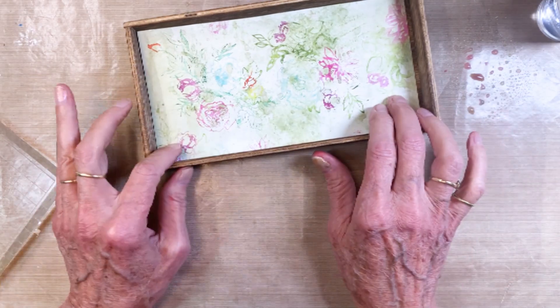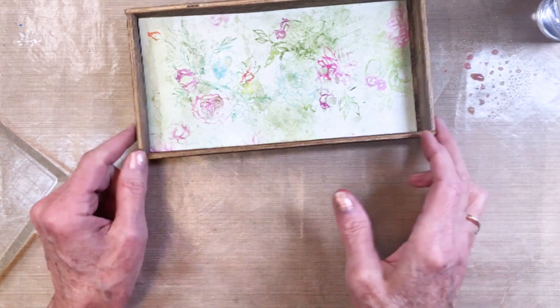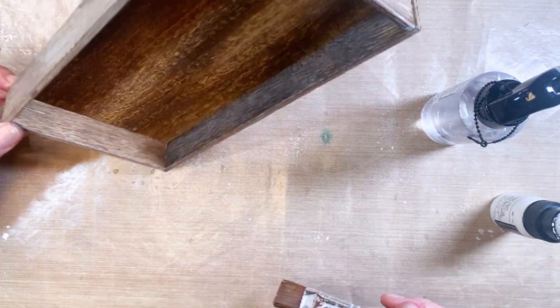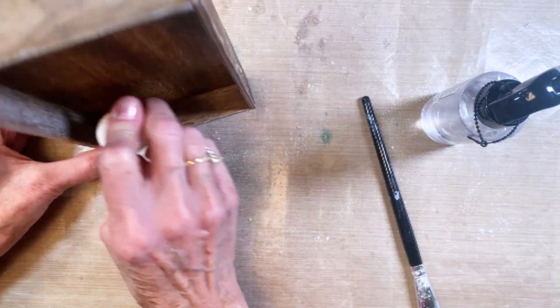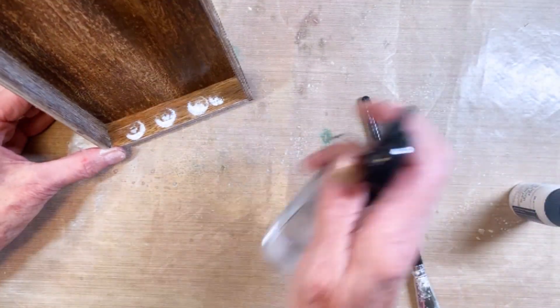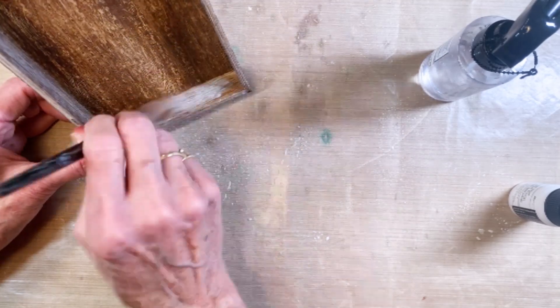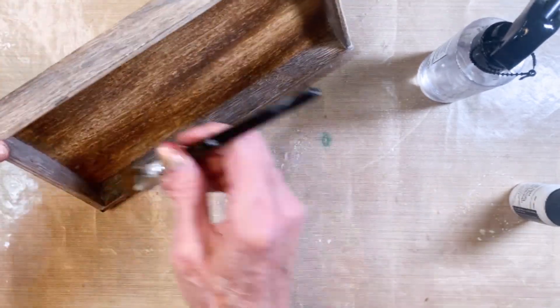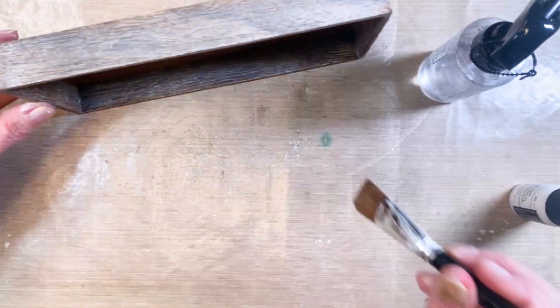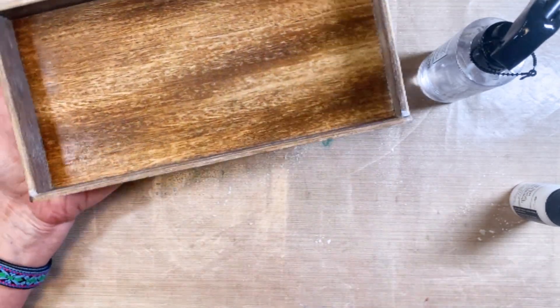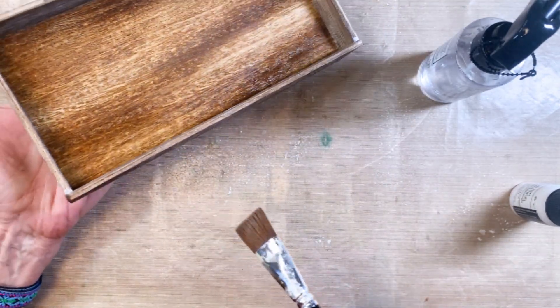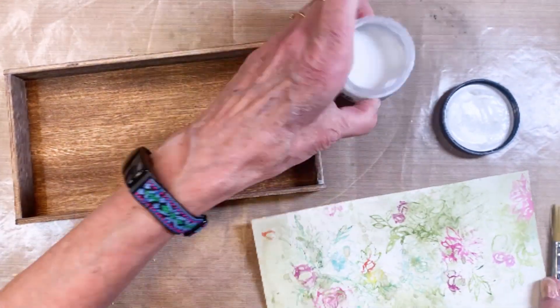I'm just stamping and you can see this added just that background to that green ink smoosh piece that will go inside the vignette box. The next thing I'm doing is I picked up picket fence distress paint and I am dabbing and painting the inside and the outside of the box to give it a vintage, old-fashioned, distressed look.